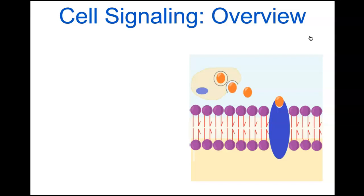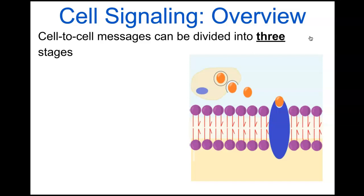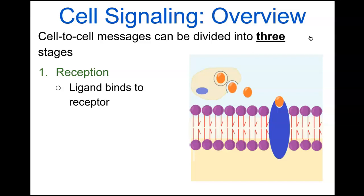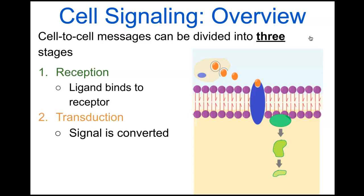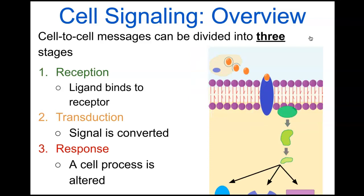Cell signaling overview: cell-to-cell messages can be divided into three basic stages. The first is reception, where ligands bind to a receptor. The second is transduction, where the signal is converted and amplified — think of it like an amplifier for the message received by the cell. The third stage is the response that results from that chemical message.